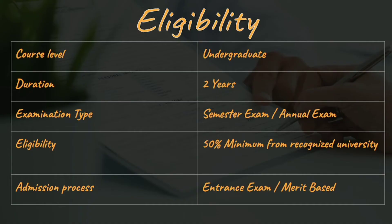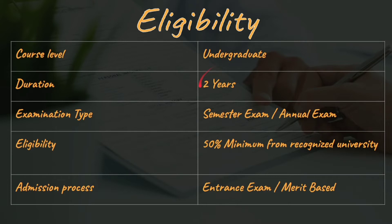Let's get started. The course level is postgraduate — I had written undergraduate but it should be postgraduate. This is after your undergraduate degree. I will be talking about MA in Statistics, not BA in Statistics, which is undergraduate. The duration of this course is two years. The BA in Statistics undergraduate degree is three years, and after that you spend two more years for this degree. Examination type is semester exam or annual exam.